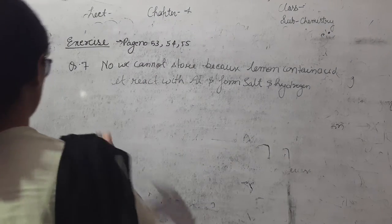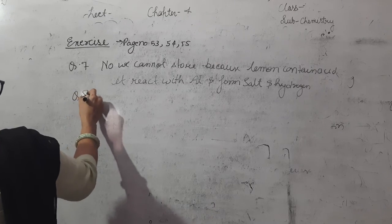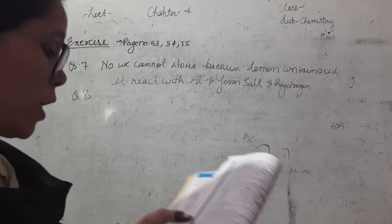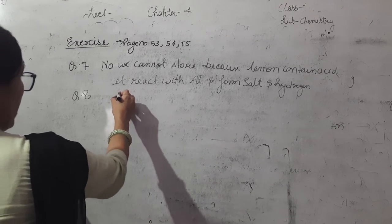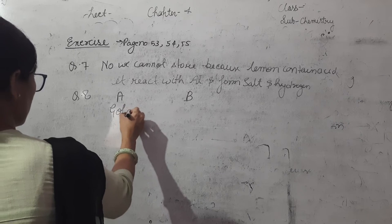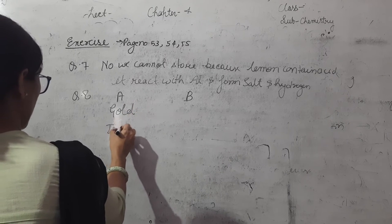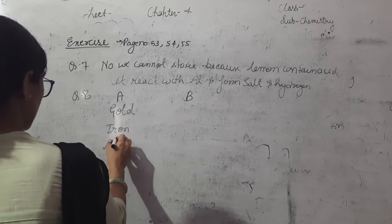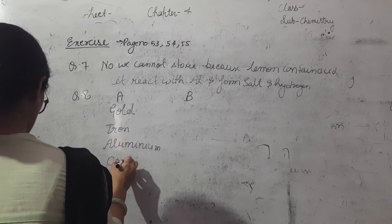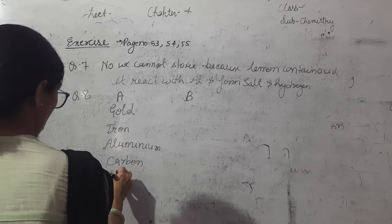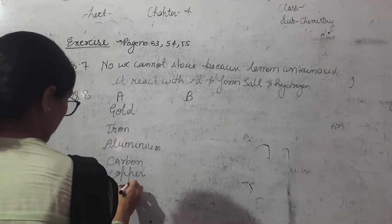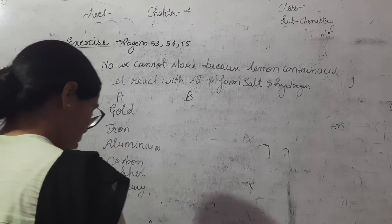Question number 8, match the column. Column A and column B. Column A is gold, B is iron, C is aluminum, carbon, copper, mercury.